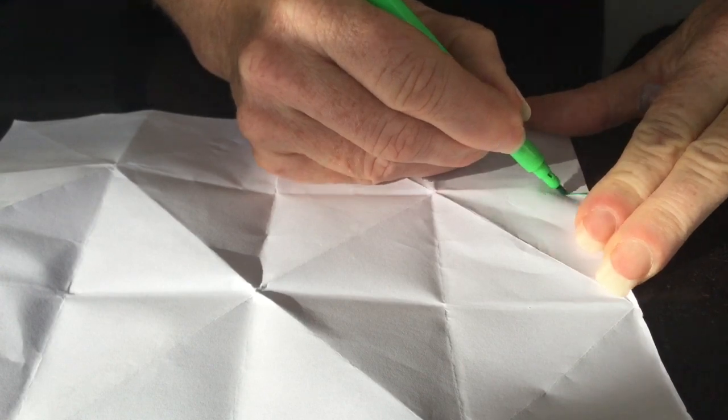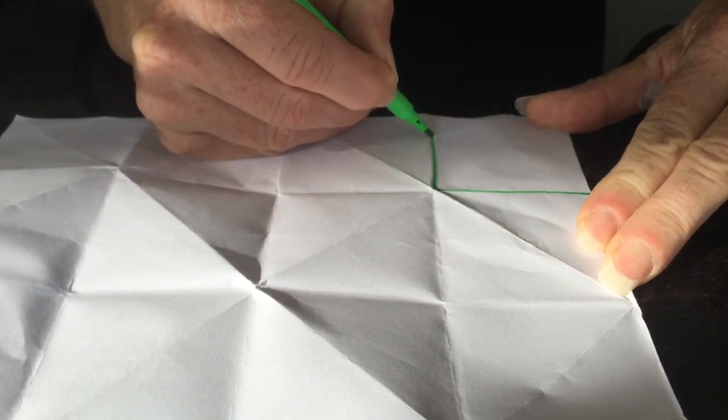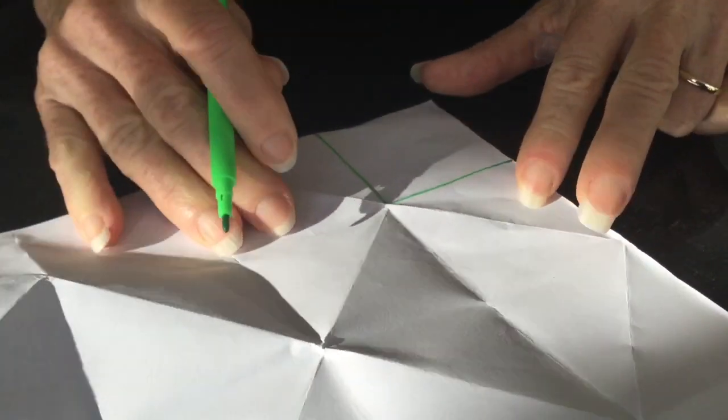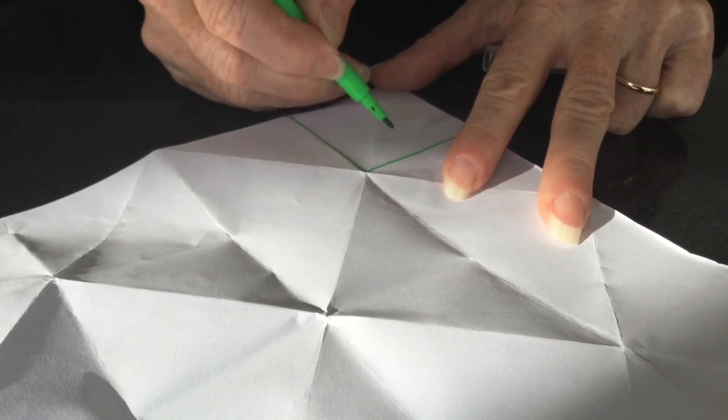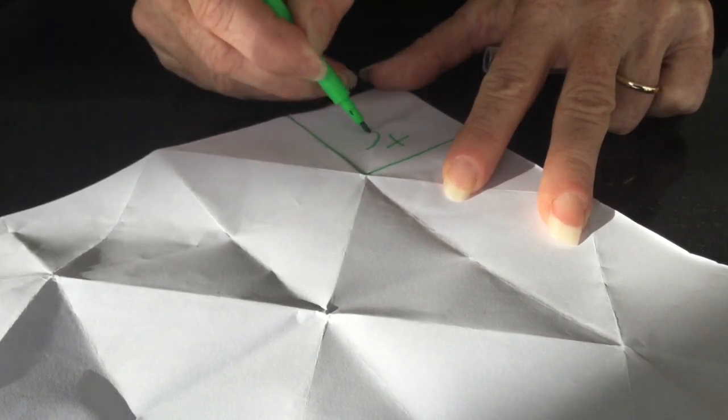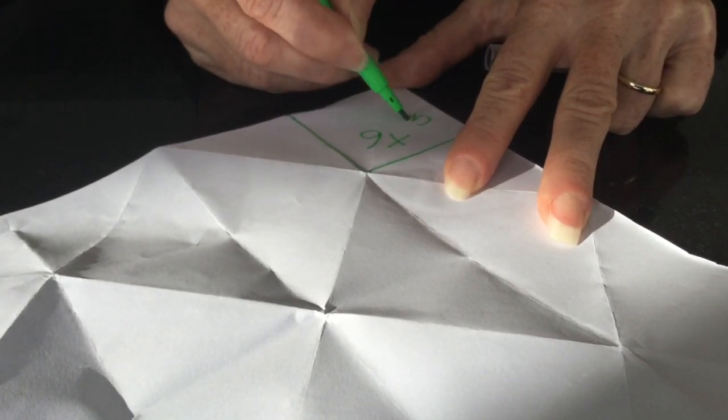So now here's the fun part. We're going to fill it in now. So we have four main corners to fill in. And because this is a maths activity, I'll get you to choose some multiplication that you would like to try.